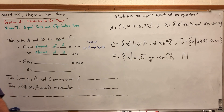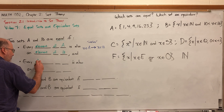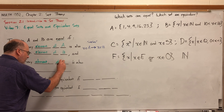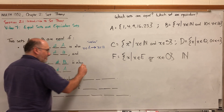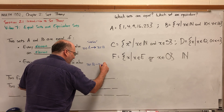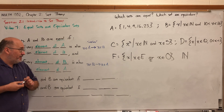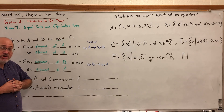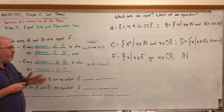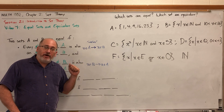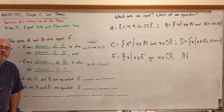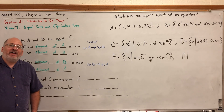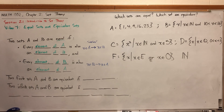The other part of the definition of equal sets is the same thing in reverse: every element of B is also an element of A. Symbolically, X is an element of B implies X is an element of A. The arrow symbolizing 'implies' is a symbol of symbolic logic, which is what Chapter 3 is about. Both conditions say the same thing: if you belong to one set, then you must belong to the other, and vice versa. Intuitively, two sets are equal if they have identically the same elements.